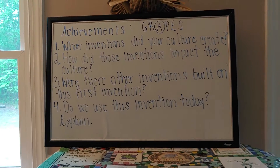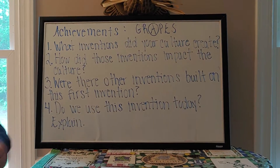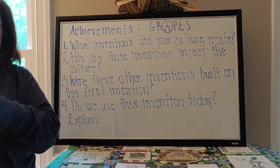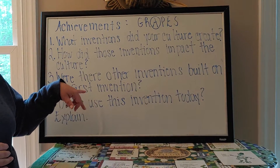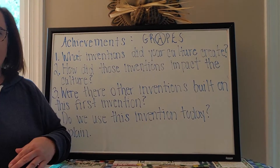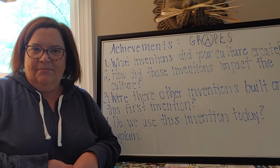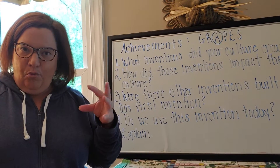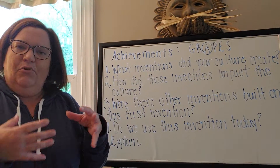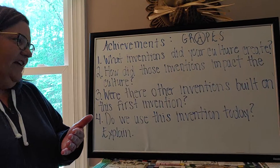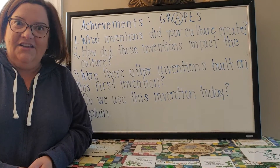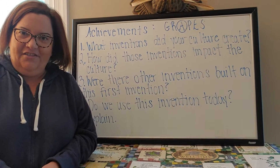The third question is: were there other inventions built on this first invention? Thinking again about irrigation — in Egypt and Mesopotamia they could move water to where it needed to be. We're going to learn about the aqueducts in Rome and how they would take water from miles away and get it into the city. People who work in agriculture today still use irrigation systems for their crops.